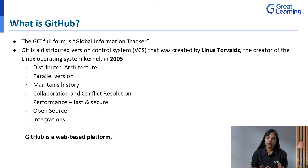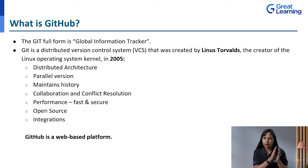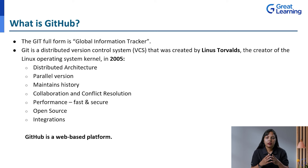Git has a distributed architecture, meaning your code is stored at one place, but every developer's machine or laptop is able to access it or keep a copy of it on their own laptop as well. That is different from a centralized architecture where the code is only accessible from one place. That's the distributed architecture provided by Git.